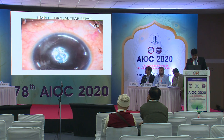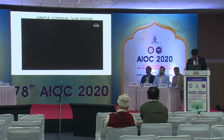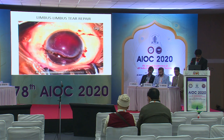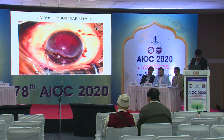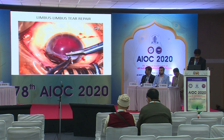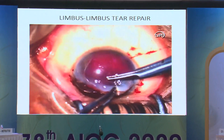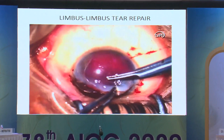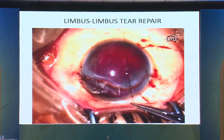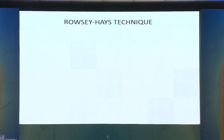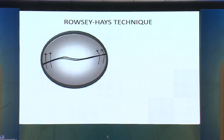For a limbus-to-limbus corneal tear, the most important principle is to place the first suture at the limbus — this provides the best anatomical opposition. Suturing then proceeds from the center, dividing the wound into two halves. When the wound is a straight limbus-to-limbus tear, Rouse's technique is applied: longer sutures in the periphery, decreasing suture length toward the visual axis, with smaller widely-spaced sutures at the center to produce better corneal contour.